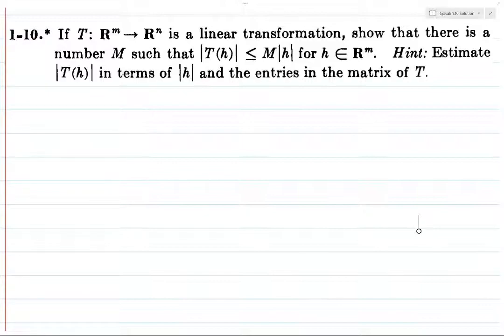...estimate this thing in terms of h and the entries in the matrix of T, sort of implies that we want to be using a particular fact, which is a really important fact in and of itself, but which hasn't been discussed. I don't think it has been discussed at all, but the Cauchy-Schwarz inequality. Schwartz or Schwarz? I think it's Schwarz. But in any case...